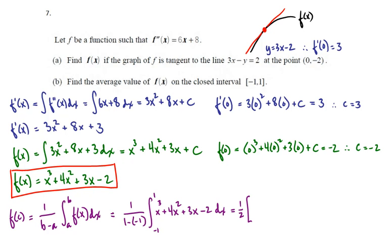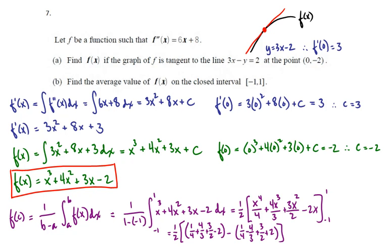We want the antiderivative of x cubed, so we have x to the fourth over 4, then 4x to the third over 3, plus 3x squared over 2, minus 2x. We're going to evaluate that at 1 minus evaluate it at -1. It's one half times [1/4 plus 4/3 plus 3/2 minus 2 minus (1/4 minus 4/3 plus 3/2 plus 2)]. The 1 fourths go away, the 3 halves go away, and the 2s will go away.